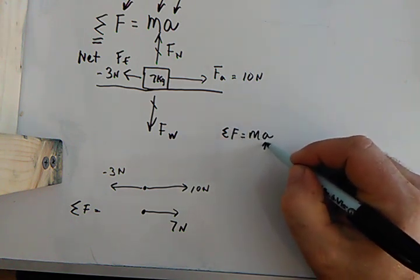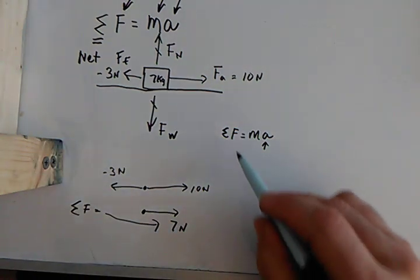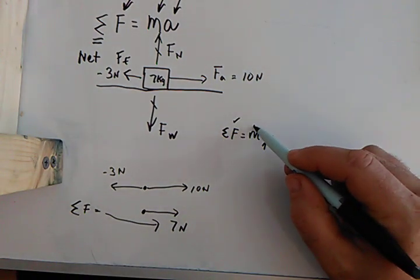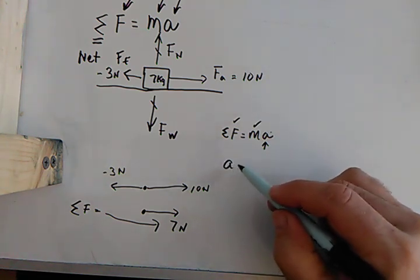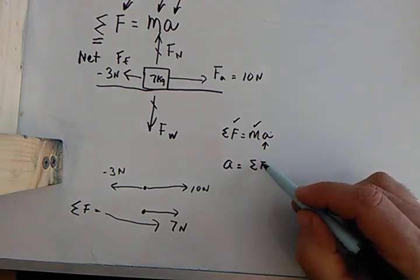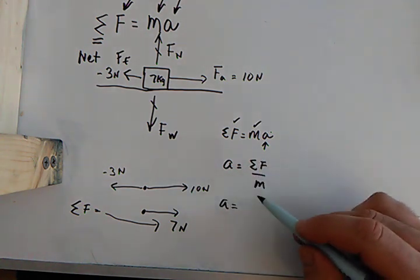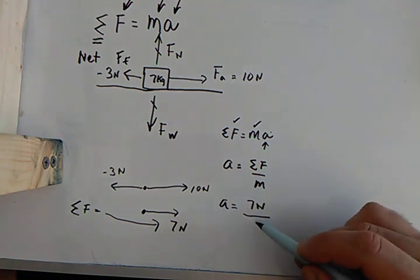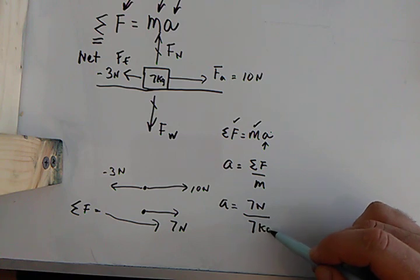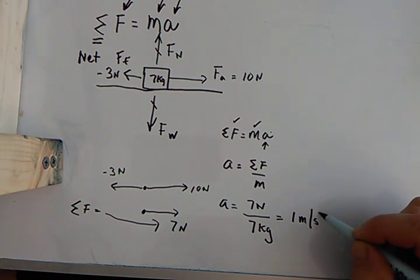I want the acceleration. Look, I've got the net force, it's 7. I've got the mass, it's 7. I'm going to get the acceleration. So acceleration is net force over mass. So the acceleration of this would be 7 Newtons over 7 kilograms.